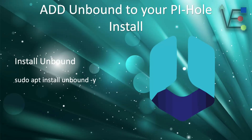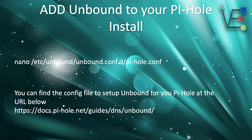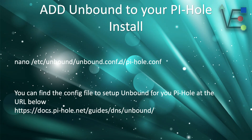To install Unbound, we're going to use `sudo apt install unbound -y`. To configure Unbound so that it is not used in a denial of service amplification attack and is appropriately configured for your Pi-hole to communicate with it for DNS resolution, we will configure the file using the command: `nano /etc/unbound/unbound.conf.d/pihole.conf`.